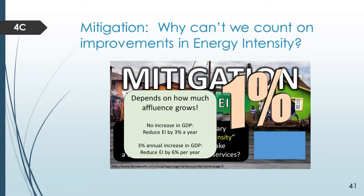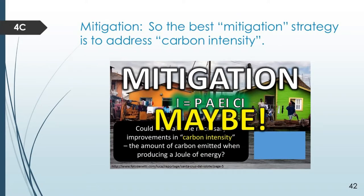The energy intensity term — the amount of energy it takes to produce a dollar's worth of goods and services — seems like a good place to start. But in practice, we just can't make big enough changes to energy intensity to balance out the very large growth in GDP. If there was going to be no improvement in affluence, we'd have to have energy intensity improvements of about 3% a year just to balance population, and our actual year-on-year improvements are only about 1%. That means we have to rely on possible improvements in carbon intensity — the amount of carbon it takes on average to produce one joule of energy.